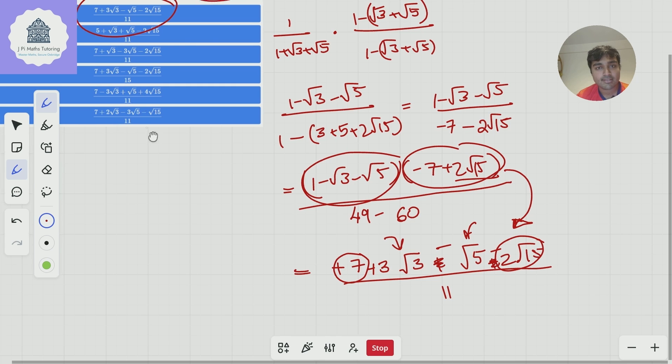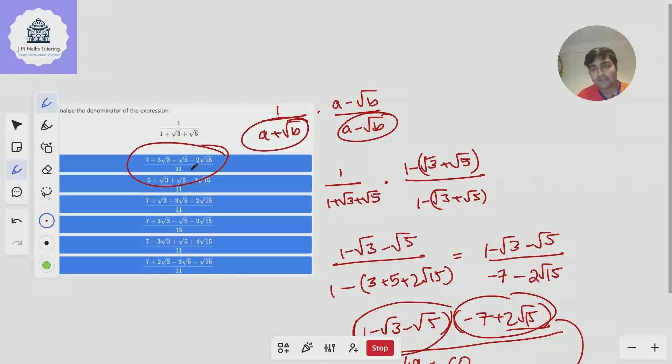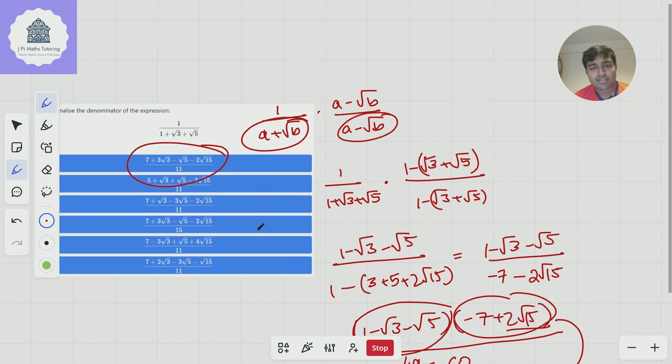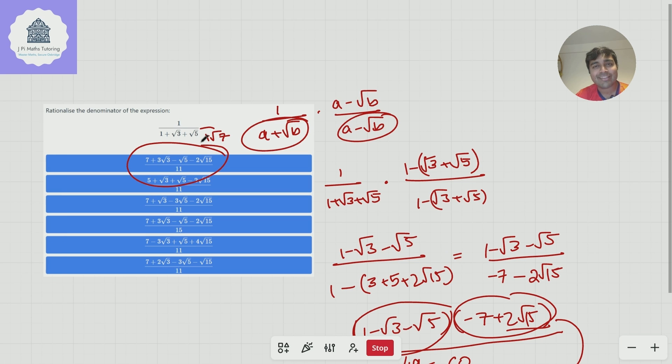So this is genuinely the correct answer and the answer here is option A. If you want a nice little extension to this problem, consider what if you add more roots? So if I added plus root 7 or something on the bottom there, how would you deal with that? Anyway thanks so much for watching, I'll catch you in the next one. Have a great day.